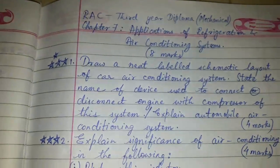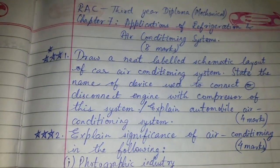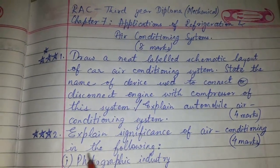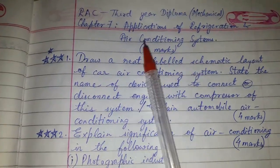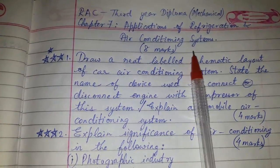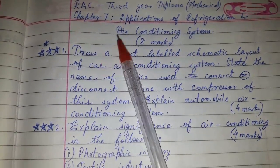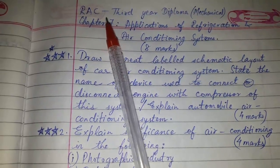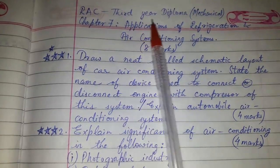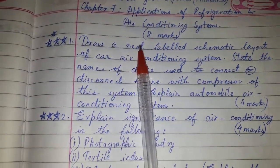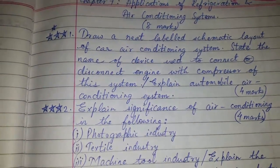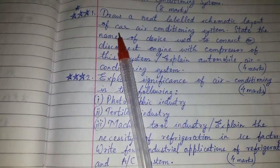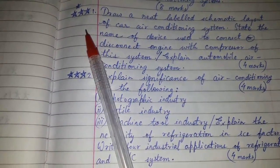Hi friends, today's topic of discussion is Chapter Number Seven: Application of Refrigeration and Air Conditioning System. This is for the subject RAC, third year diploma mechanical. This chapter is for eight marks.